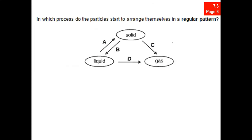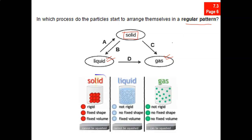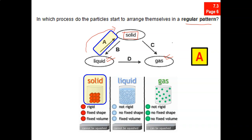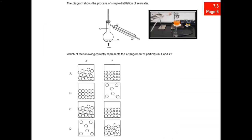For the next question, they are asking which process do particles start to arrange themselves in a regular pattern. The key point here is regular pattern. Straight away, you should zoom into solid because solid particles are arranged in a regular pattern, while gas and liquid particles are not. So the only answer is A — the liquid particles will start to arrange themselves, becoming more and more regular, eventually becoming a solid.